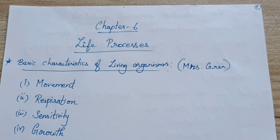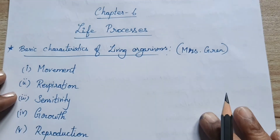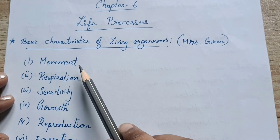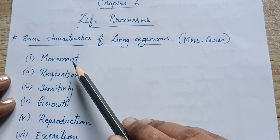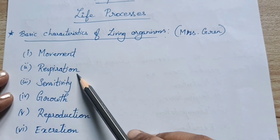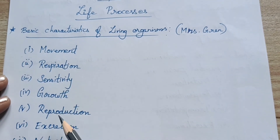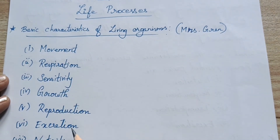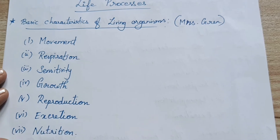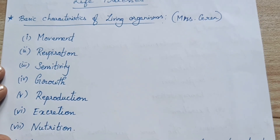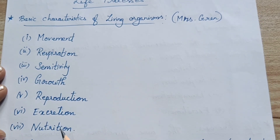So the characteristics are: movement, respiration, sensitivity, growth, reproduction, excretion, and nutrition. These are the basic characteristics of the living organism.